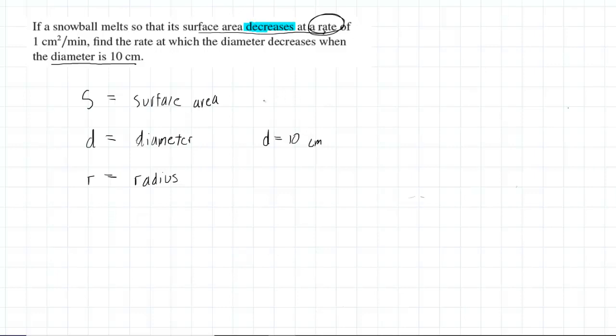So putting this all together in notation, we would say that the derivative of the surface area with respect to time is equal to negative 1 centimeter squared per minute.